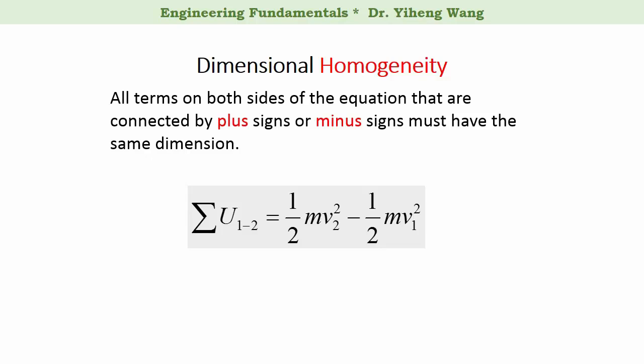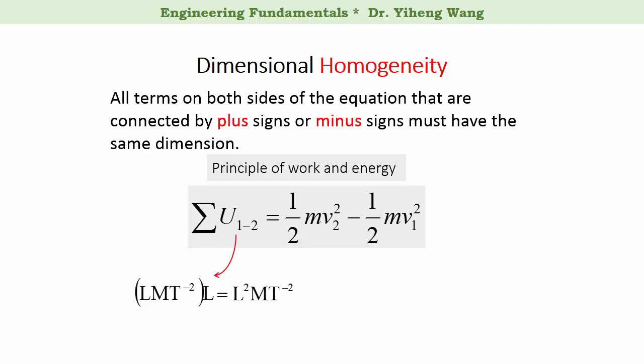For example, here we have the principle of work and energy. The term on the left-hand side is the total work done to the system, and we know that the dimension of work is the dimension of force times length, which is length squared times mass times time to the negative second power. On the right-hand side we have the difference in kinetic energy, defined as one-half times mass times velocity squared. The dimension for energy is mass times the dimension of velocity squared — length over time squared — which is also length squared times mass times time to the negative second power. Therefore this equation demonstrates dimensional homogeneity.